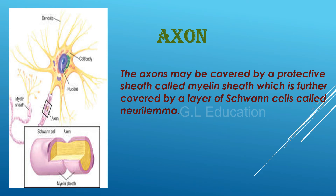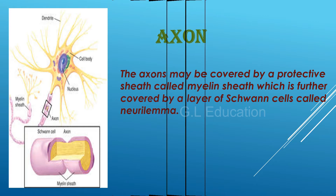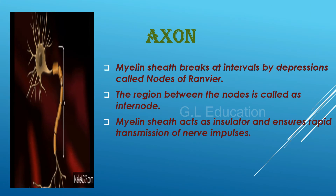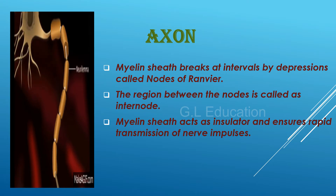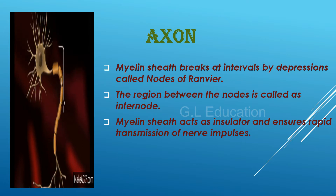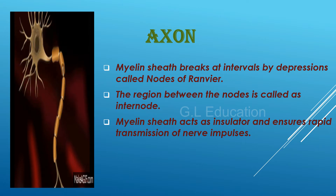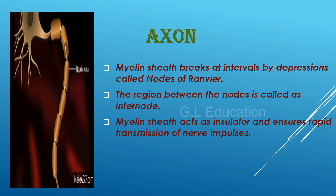The axon may be covered by a protective sheath called myelin sheath, which is further covered by a layer of Schwann cells called neurilemma. Myelin sheath breaks at intervals by depressions called nodes of Ranvier. The region between the nodes is called internode. Myelin sheath acts as an insulator and ensures rapid transmission of nerve impulses.